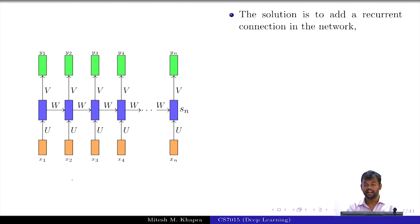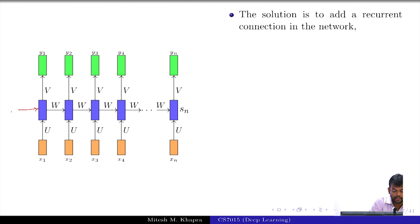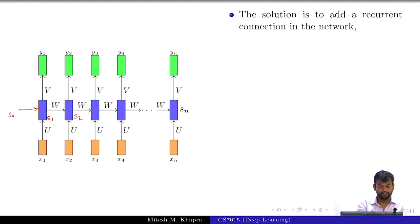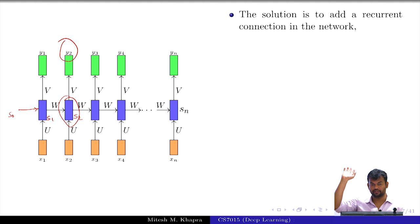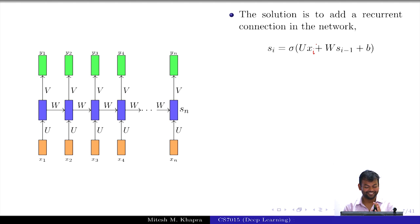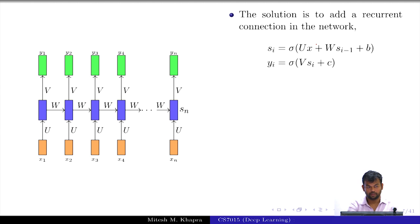The final solution is to add a recurrent connection in the network. Now, what is the function being executed at every time step? Assume there is an S0. We have S1, S2, S3 up to Sn. Think in terms of y2 — first think of what S2 is, and from S2, y is straightforward. In general, Si equals U times xi plus W times S(i-1) plus b.